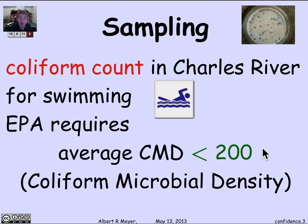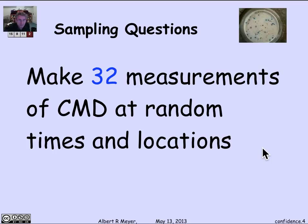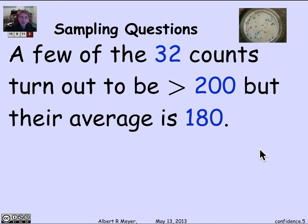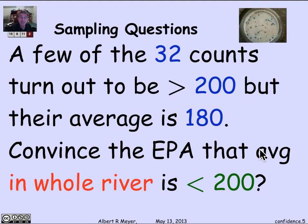We want to figure out whether, when we sample CMDs around the river and get some numbers, we can conclude that the average CMD is less than 200, and we need to convince the EPA of that. We're never going to be certain, but we'll take 32 measurements at random times and locations around the river. Although a few of them are over 200, the average of the 32 samples is 180. Our task now is to convince the EPA that the average in the whole river is really less than 200.